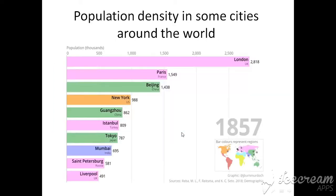Here we have population density in some cities around the world. For example, the highest population density shown here — London is the highest populated city.